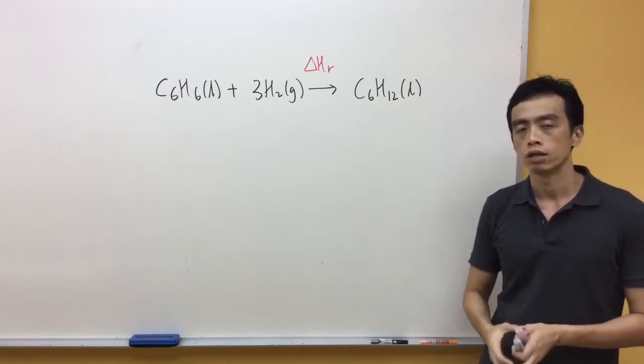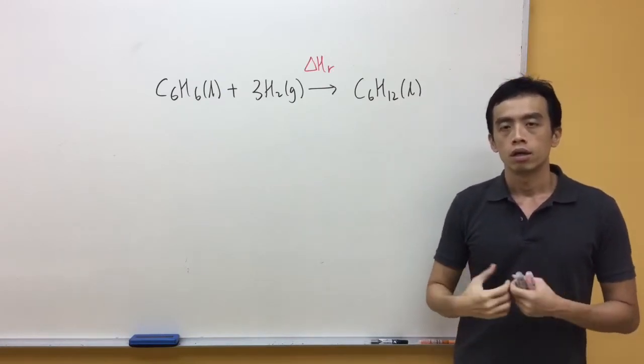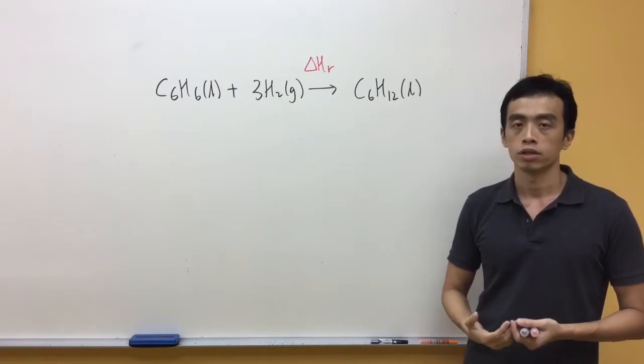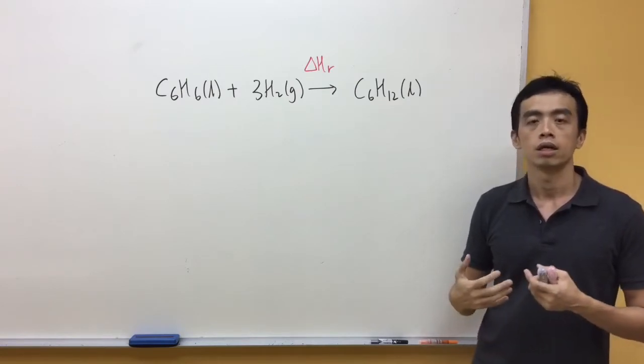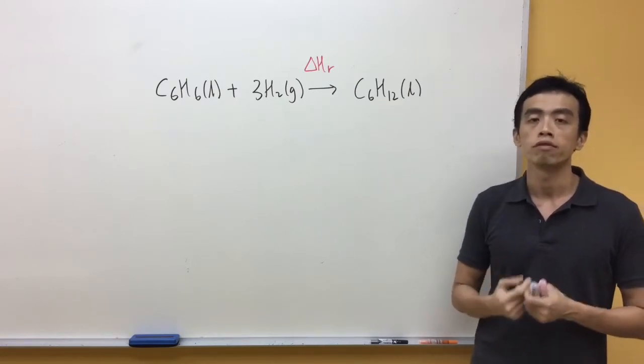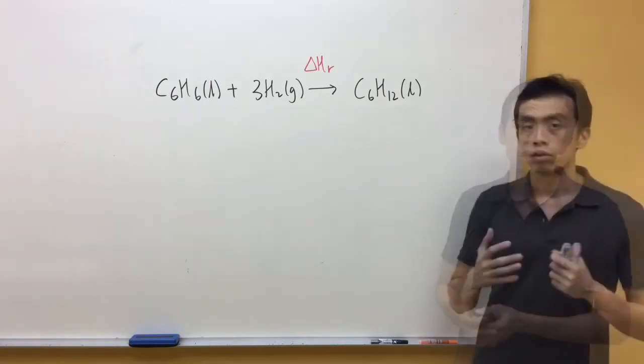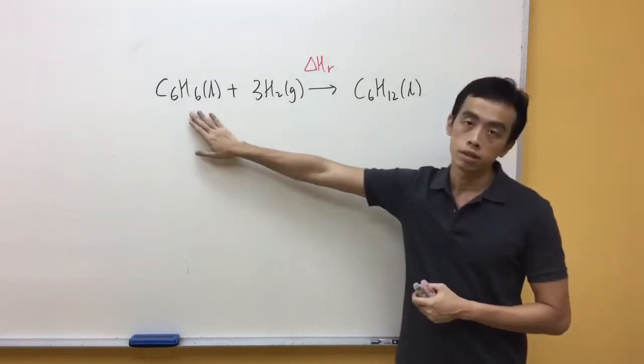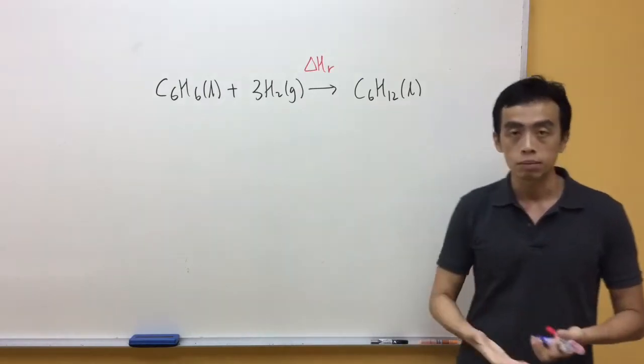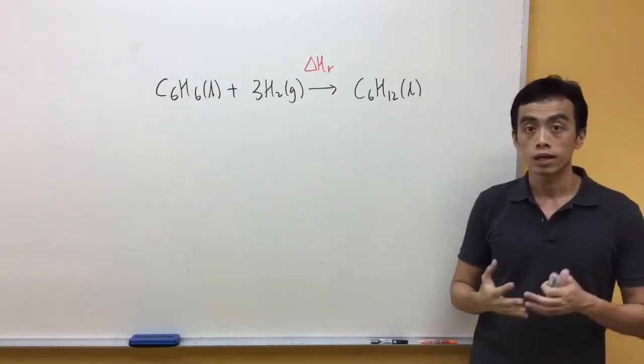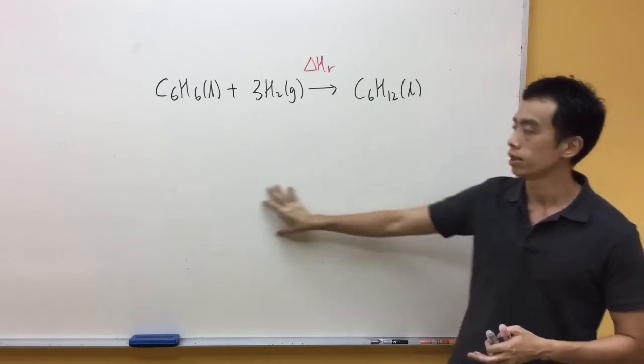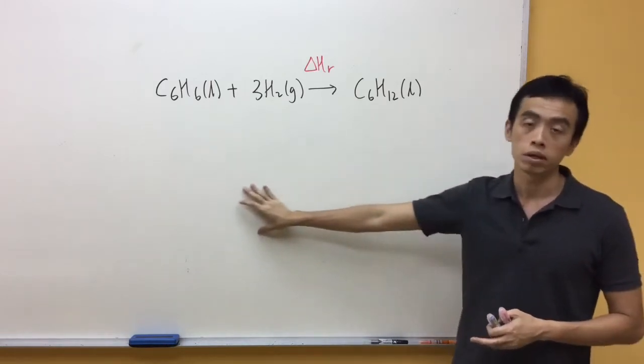Then how do we draw the energy cycle? Now, what we understand from the entropy change of combustion is the entropy change when one mole of the compound or substance is burned in excess oxygen. So if I burn C6H6, which is a hydrocarbon, I will get carbon dioxide and water. So basically, bottom here, I can put down carbon dioxide and water.